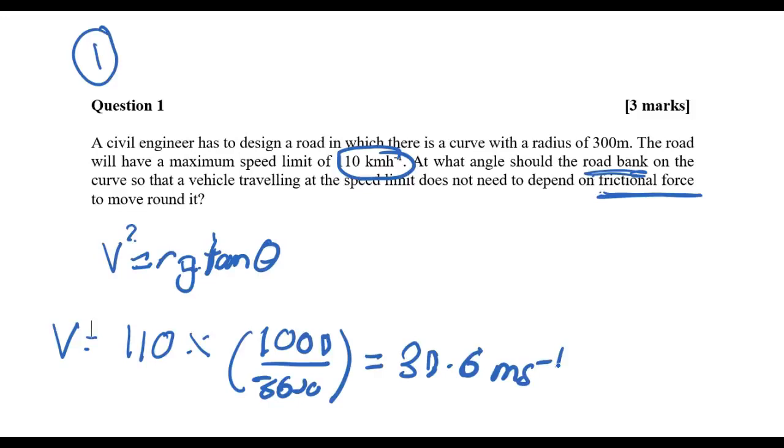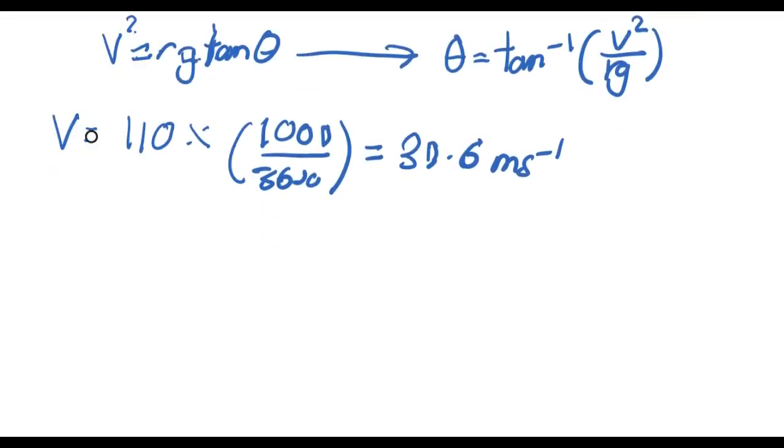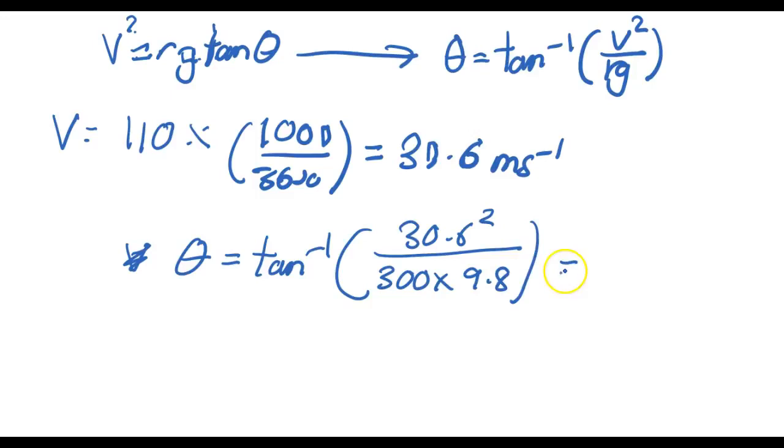Once you have that, you can now put it into the formula. If you look at this equation, θ = arctan(v²/rg). When you plug in the formula, θ equals arctan of v² which is 30.6 squared, divided by r times g. R is 300 followed by g = 9.8. Your answer here is simply 17.7 degrees. So that is the answer.